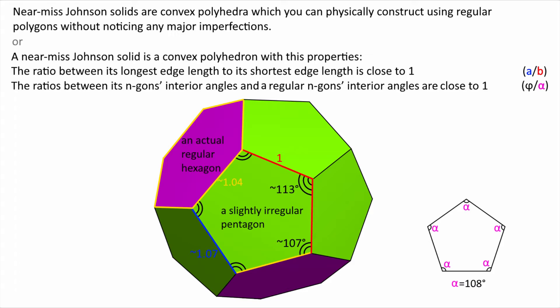One could also define a near-miss Johnson solid as a convex polyhedron with these properties. The ratio between its longest edge to the shortest edge is close to 1. The ratio between its n-gon's interior angles and regular n-gon's interior angles must be close to 1.